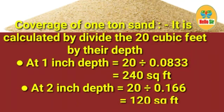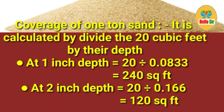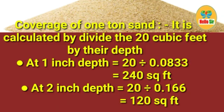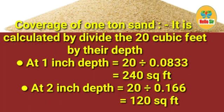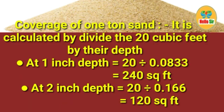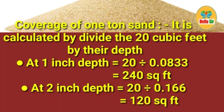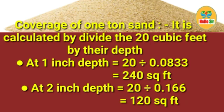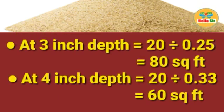Coverage of one ton of sand is calculated by dividing 20 cubic feet by their depth. At 1 inch depth: 20 divided by 0.0833 equals 240 square feet. At 2 inch depth: 20 divided by 0.166 equals 120 square feet.